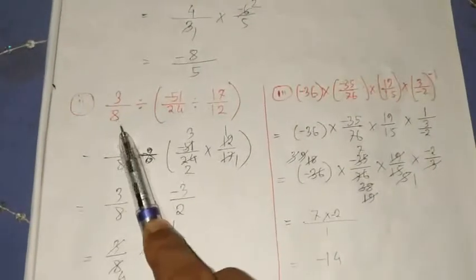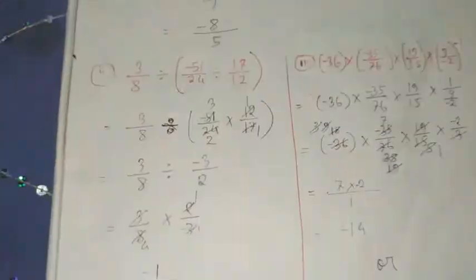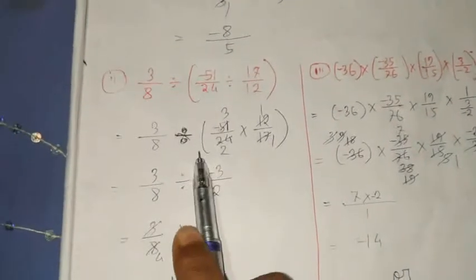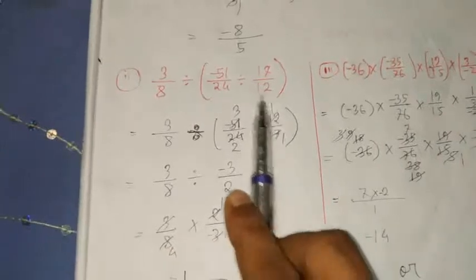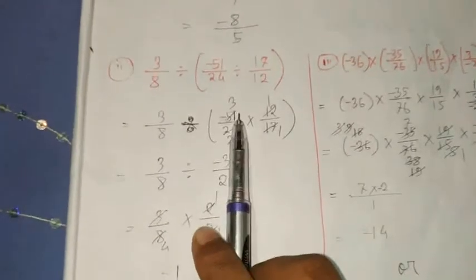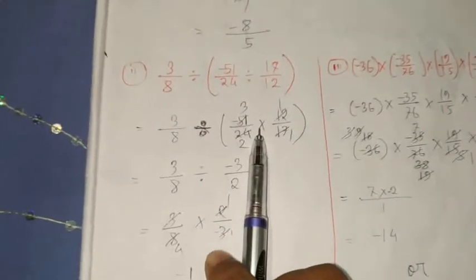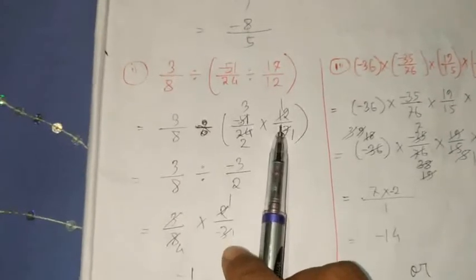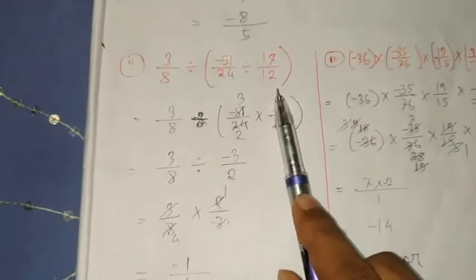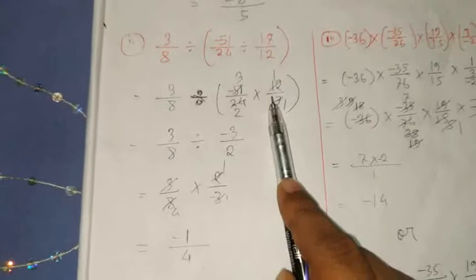The next question is: 3 by 8 divide minus 51 by 24 divide 17 by 12. When you see this type of problem, change the division sign to multiplication. We have to solve the bracket first, which is minus 51 by 24. Change the sign to multiplication and take the reciprocal of 17 by 12, which is 12 by 17. Cancel by finding common factors.